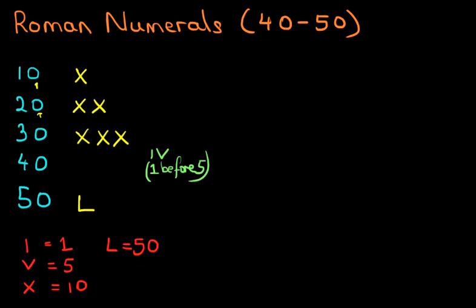That's how we write 4. It is 1 before 5. For 40 we do something similar. But what we say is, it's 10 before 50. For 4 we do 1 before 5. For 40 it is 10 before 50.